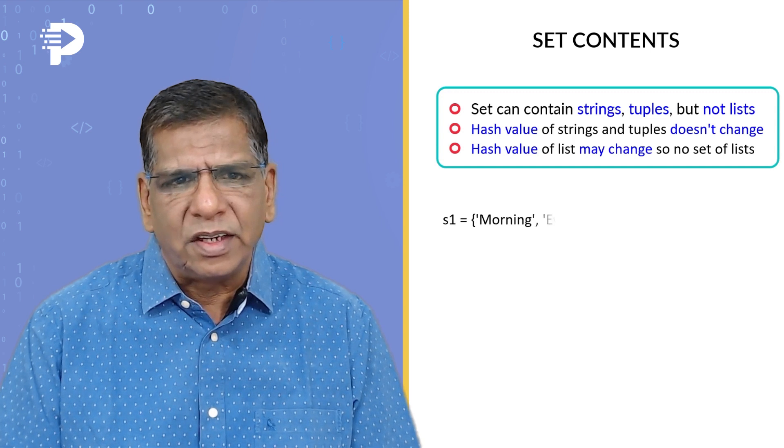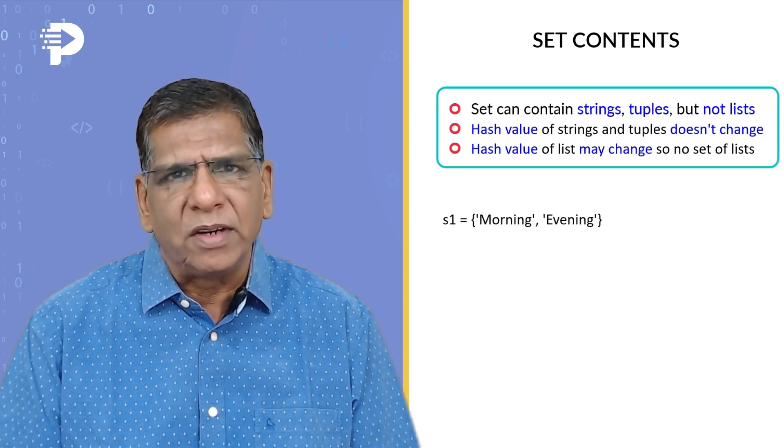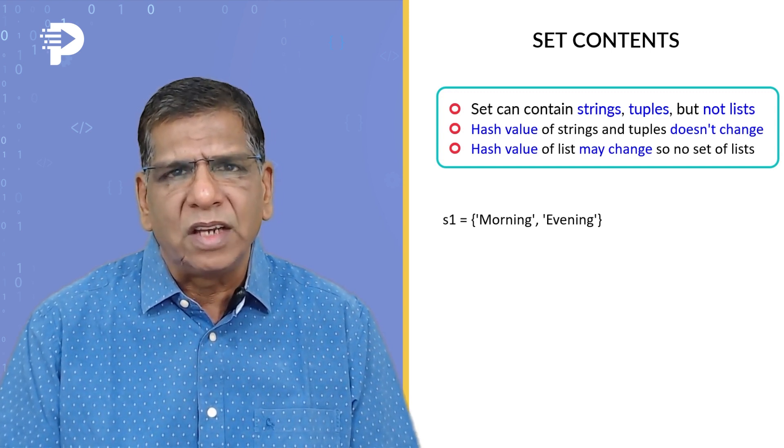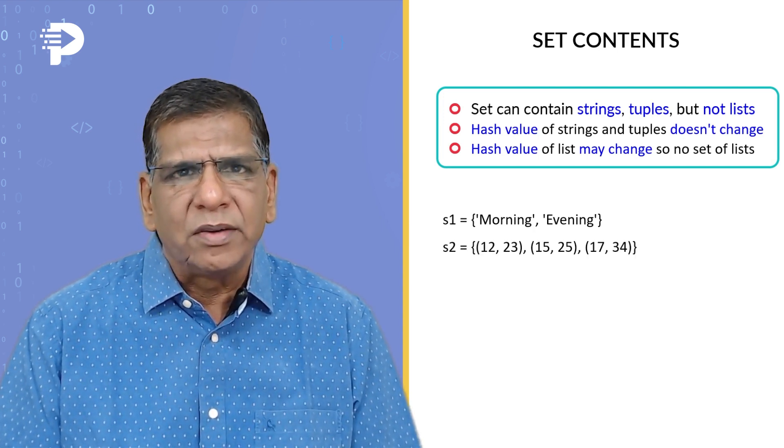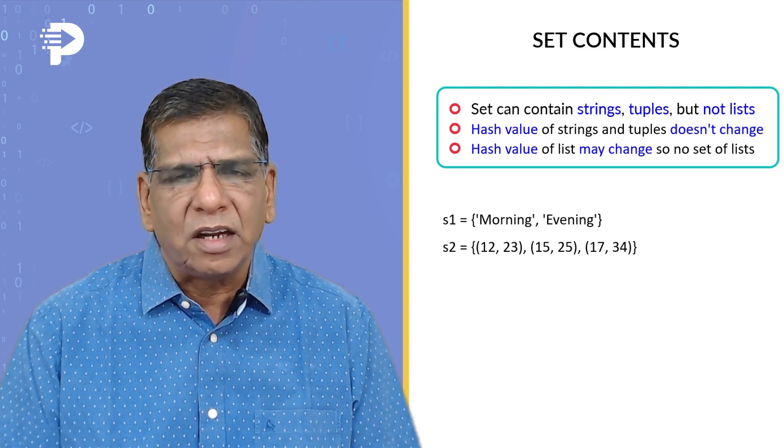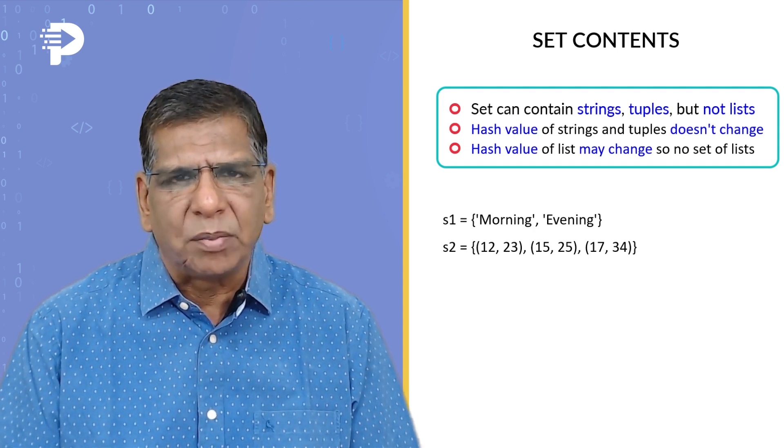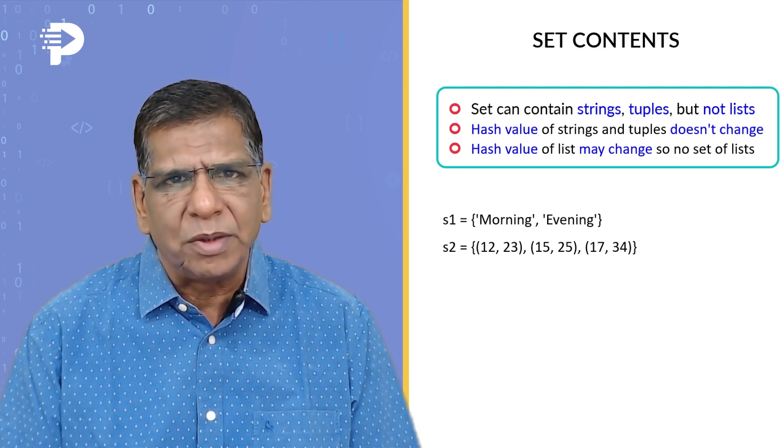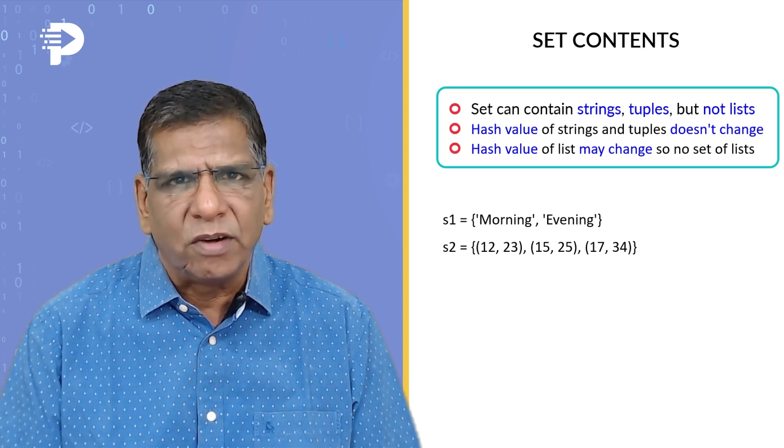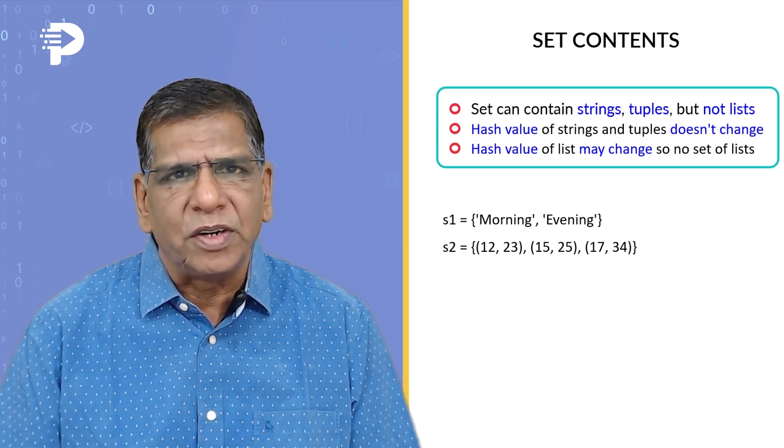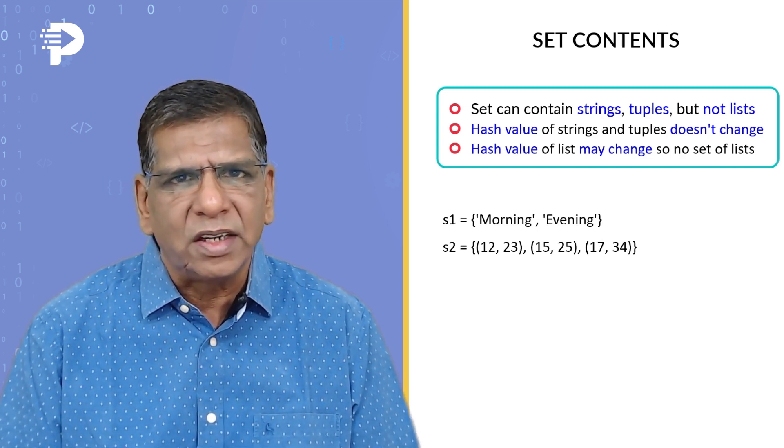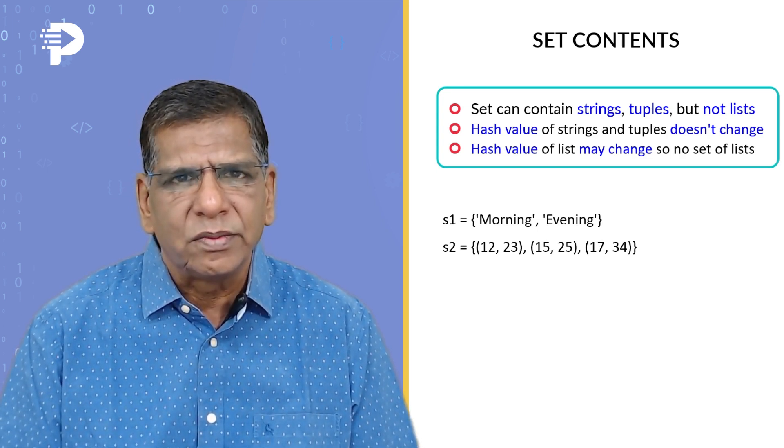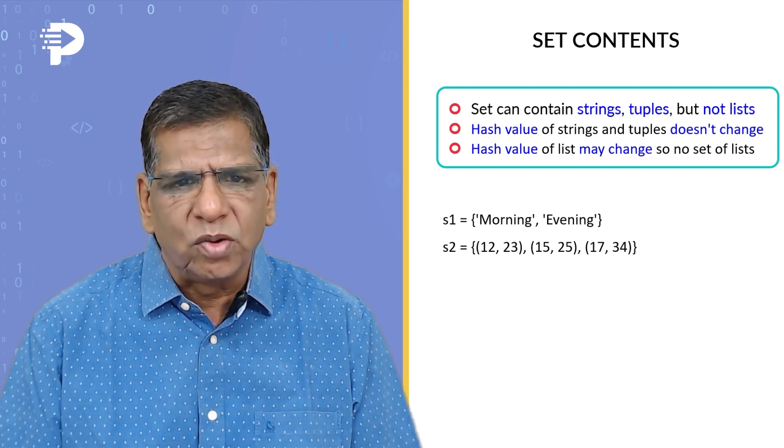So if I say s1 equal to morning comma evening, this would be fine, because each element here is a string. Even this is okay. Each element is a tuple. And since tuples are immutable, hash values would remain same. 12, 23 you'll get one hash value; 15, 25 you'll get another hash value; and 17, 34 you'll get yet another hash value. So s1 and s2 are okay.